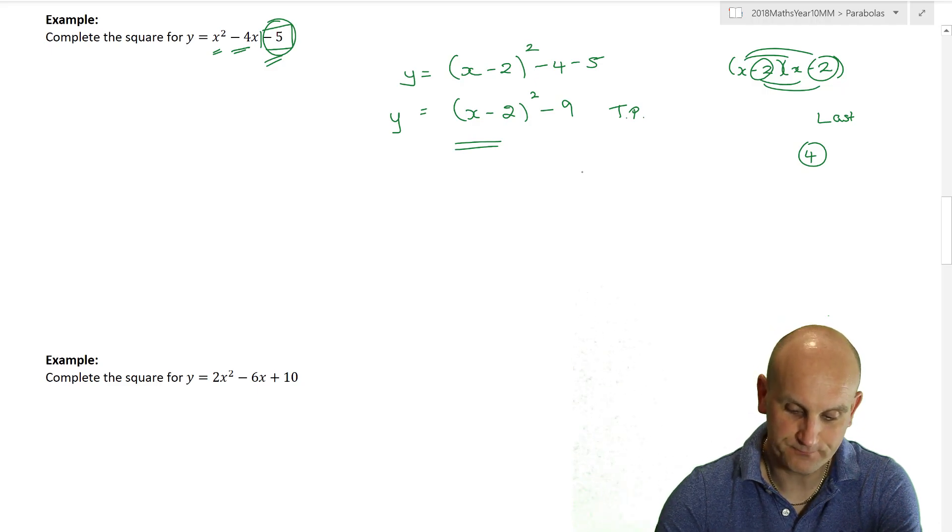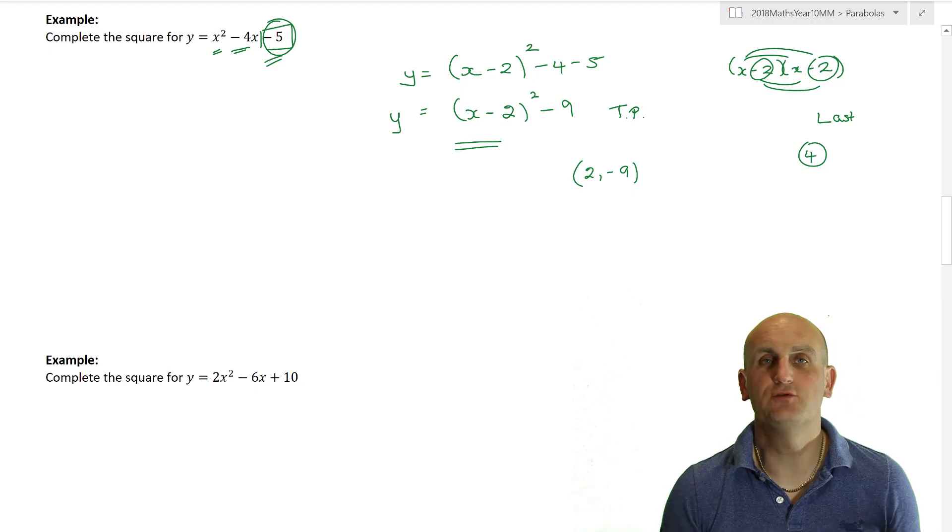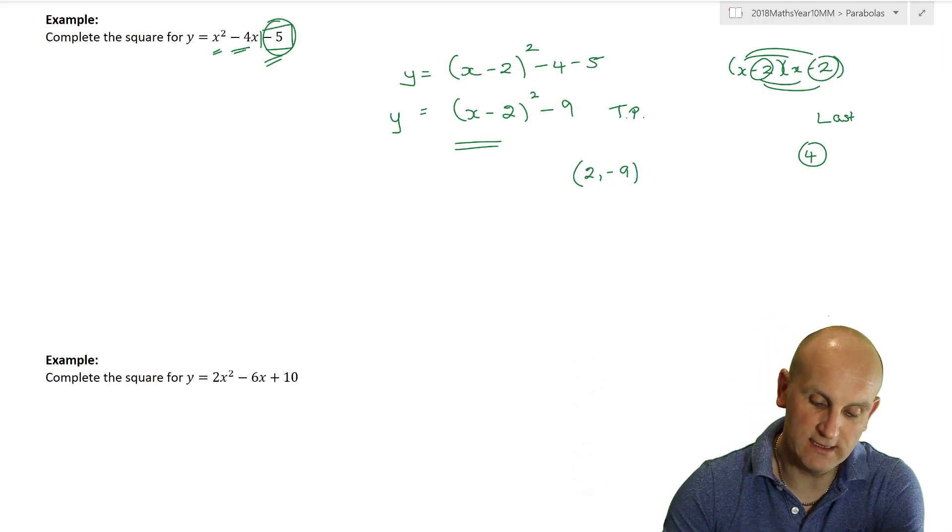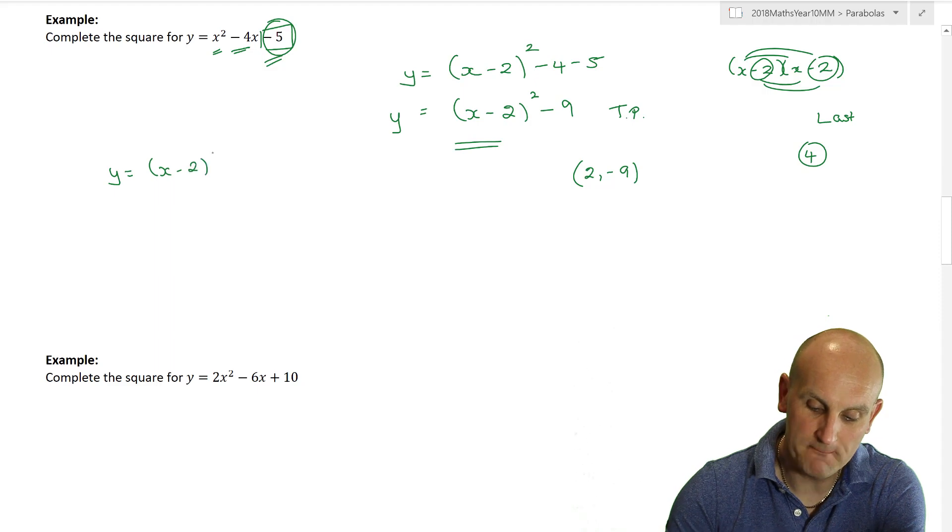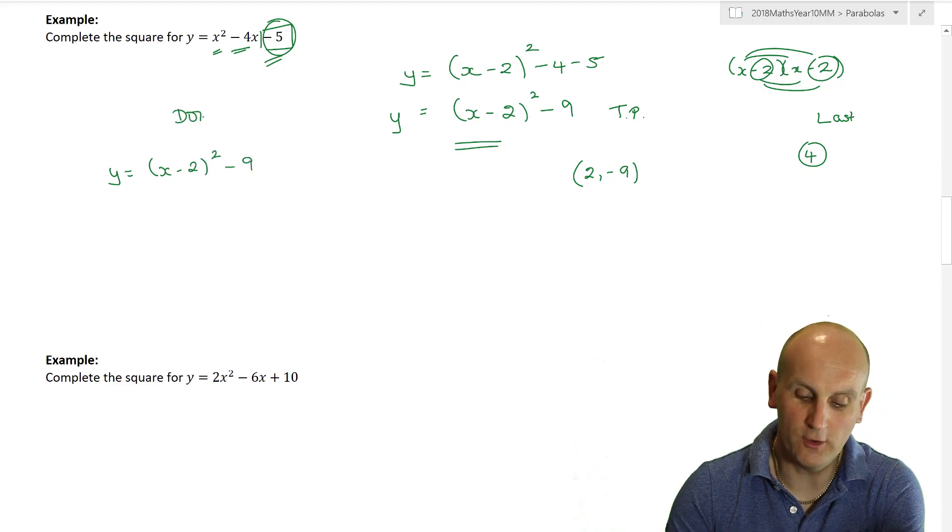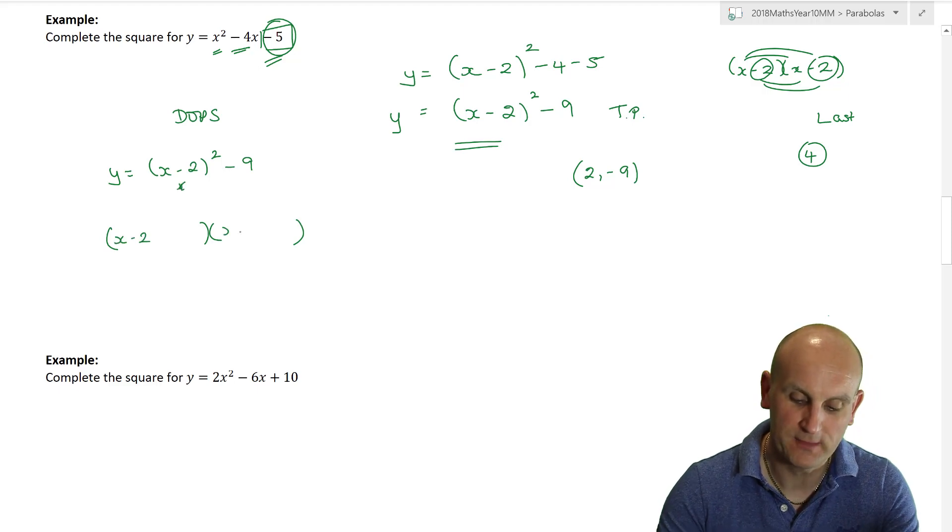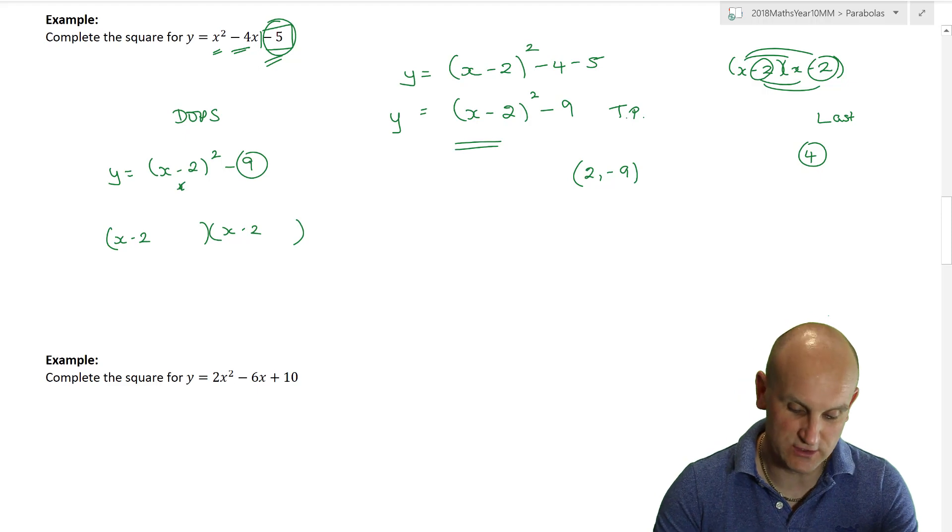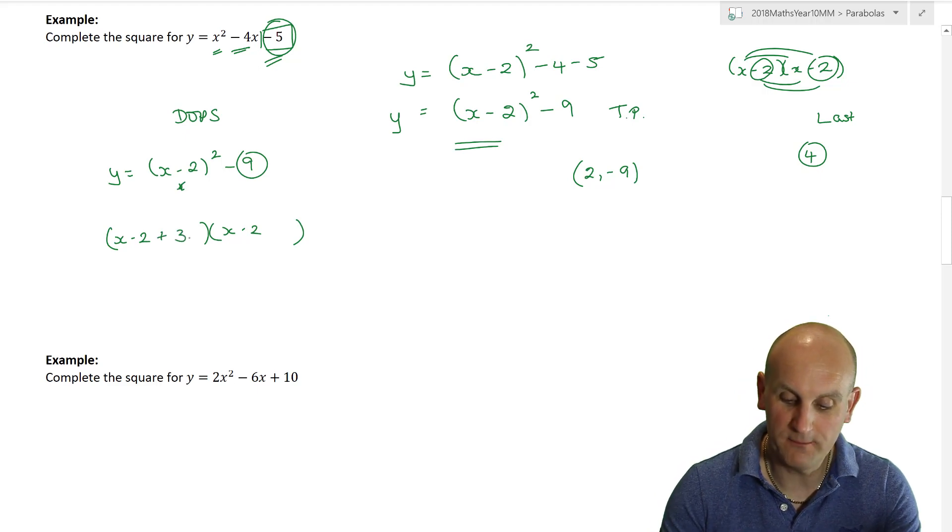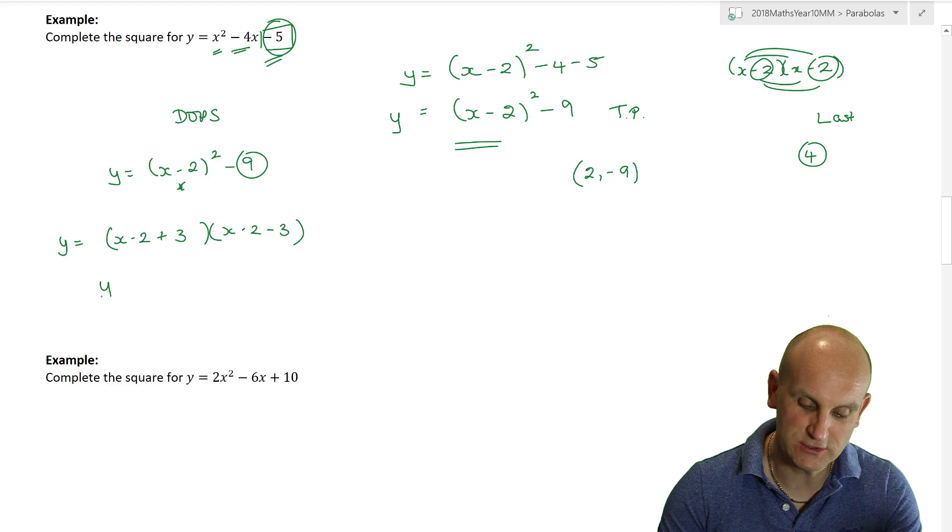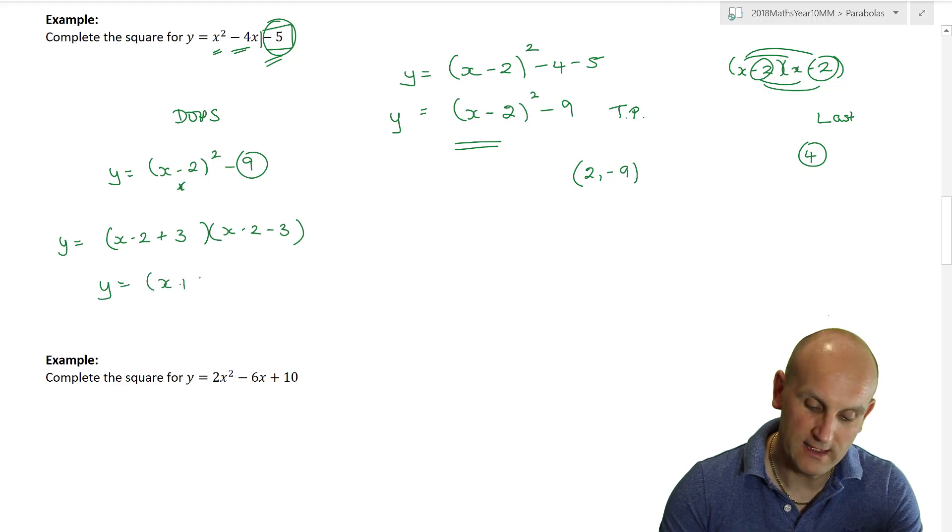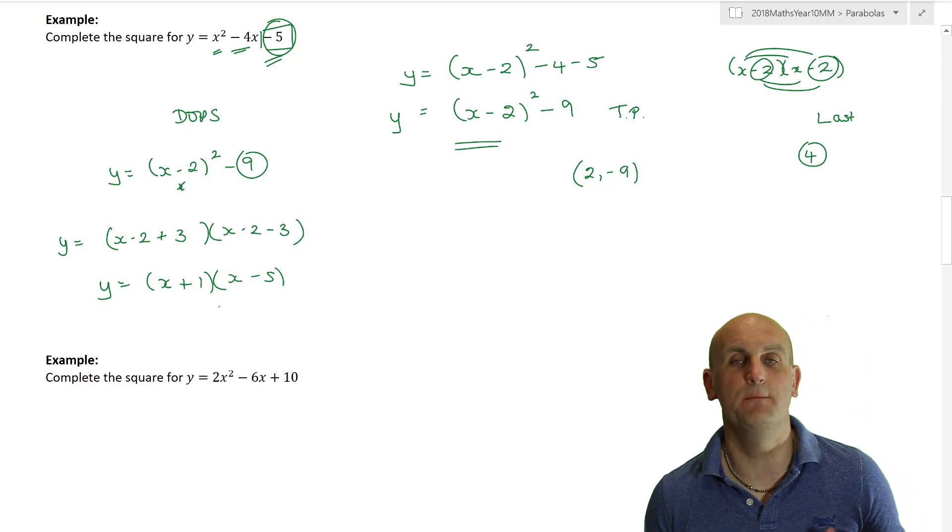It's also called the turning point form. There are other ways of completing a square. This is called the turning point form. And the reason it's called the turning point is because I can now read my turning point from it. Basically, the turning point here works out to be 2 minus 9. If I wanted to write that in binomial product form, then I can actually realize that if I've got y equals x minus 2 squared minus 9, this is actually DOPS.